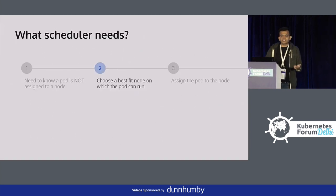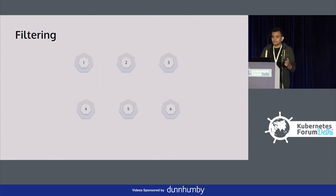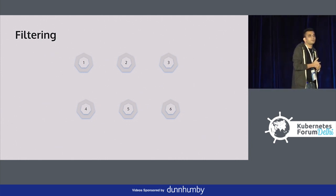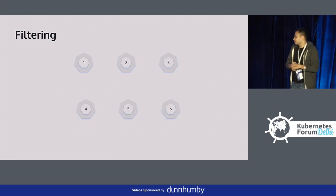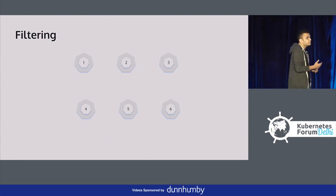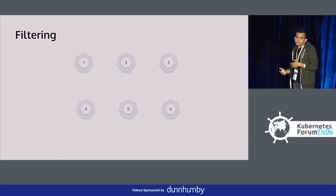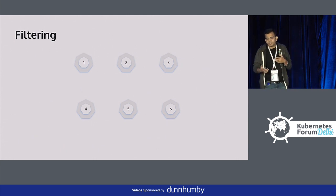The next thing it has to figure out is which is the right node. This is a two-phase process: part one is filtering and part two is scoring. In filtering, the pods have certain requirements — be it memory, CPU, volumes, and so on. The scheduler analyzes each node whether it meets the requirements. If it doesn't, the node is filtered out; if it does, it is filtered in.